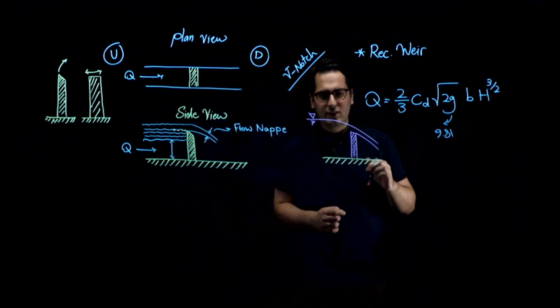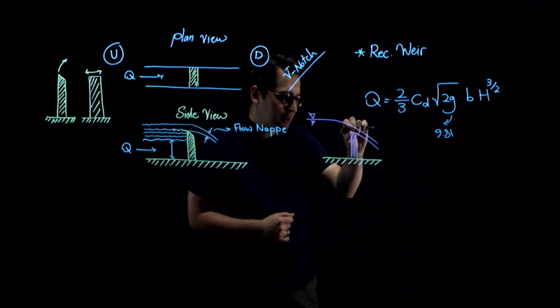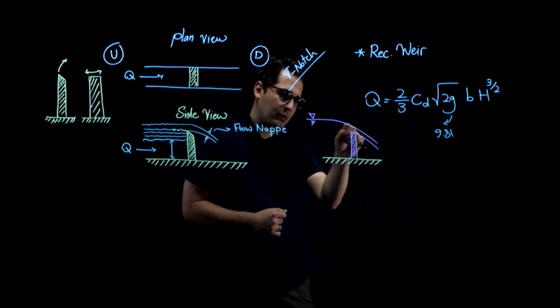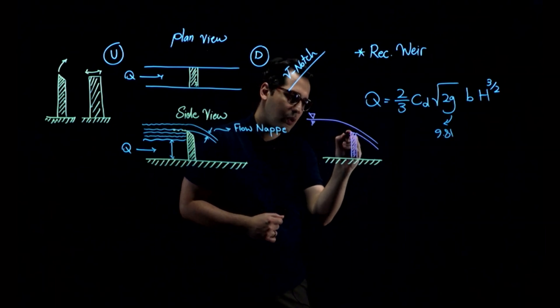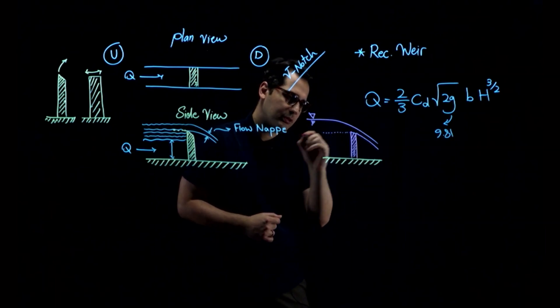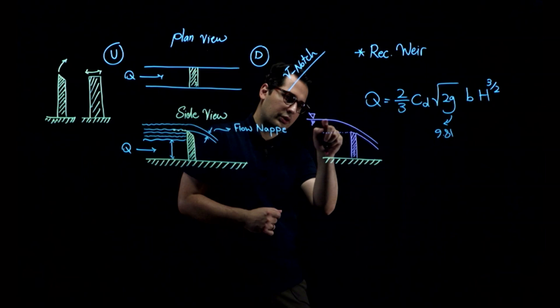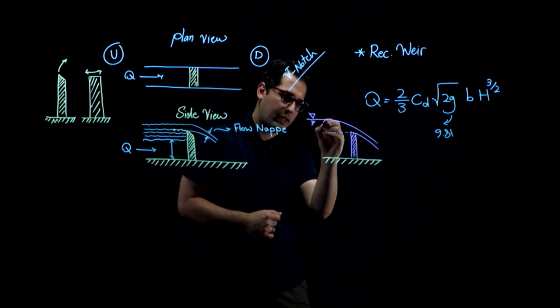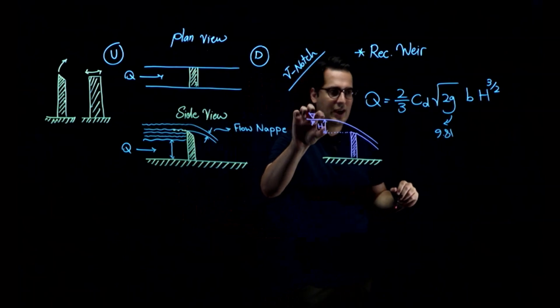I'm not going to measure it over here, though. Why? Because look at the surface of water. It's curved. So I'm going to go back until the surface of water is horizontal and then measure capital H right over here. So this is capital H.